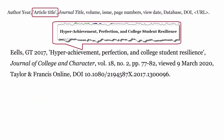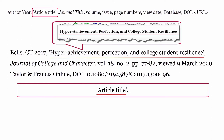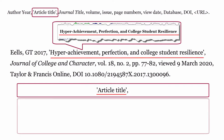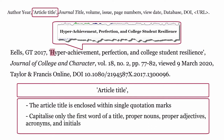Article title: the article title is formatted using the title of the article enclosed by single quotation marks, followed by a comma. Capitalize only the first word of the title, proper nouns, proper adjectives, acronyms, and initials.